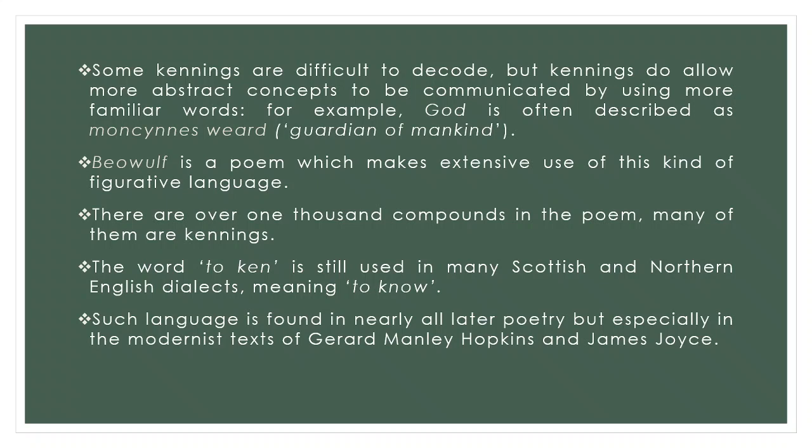Kennings allow more abstract concepts to be communicated using familiar words — for example, God is often described as 'Mankind's Guardian'. One of the most famous epic poems of that time is Beowulf, which makes extensive use of this figurative language. There are over one thousand compounds in the poem, totalling one-third of all the words in the text. The word 'ken' is still used in many Scottish and Northern English dialects, meaning 'to know'. Such language is a way of knowing and expressing meaning in striking and memorable ways, with continuities found in the modernist texts of Gerard Manley Hopkins and James Joyce.